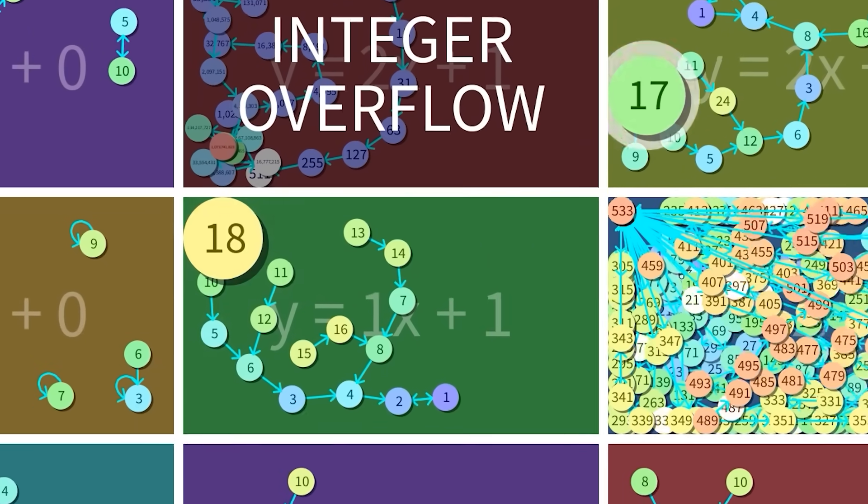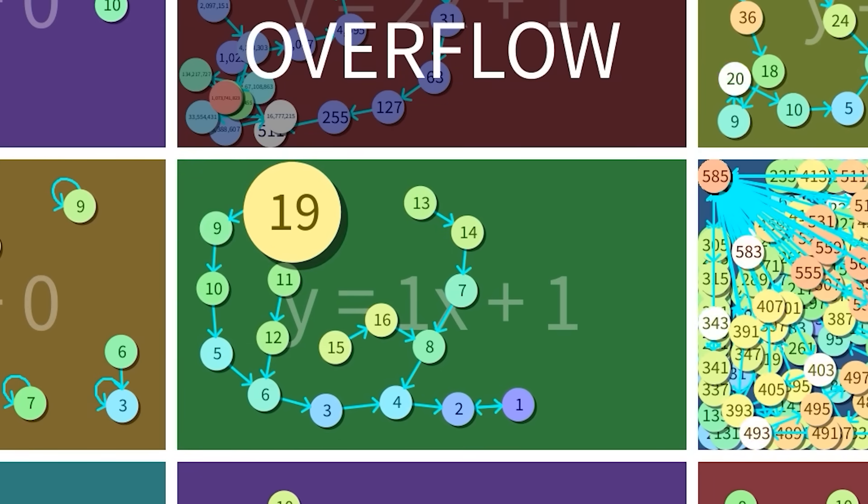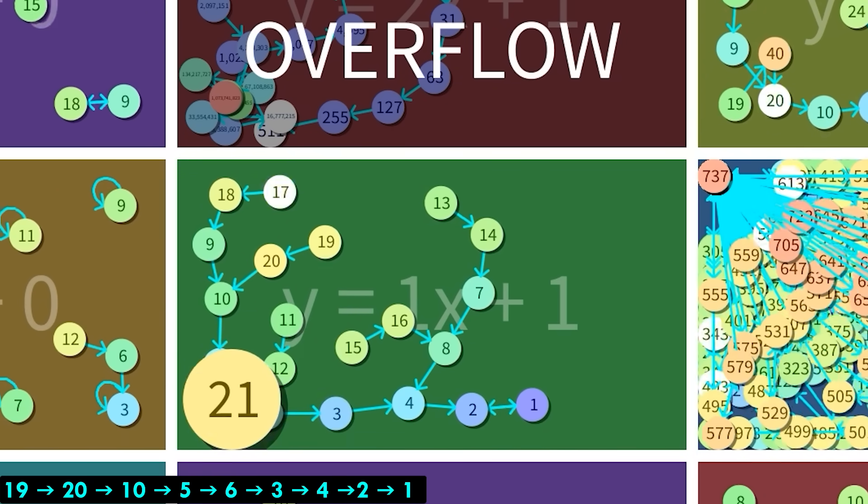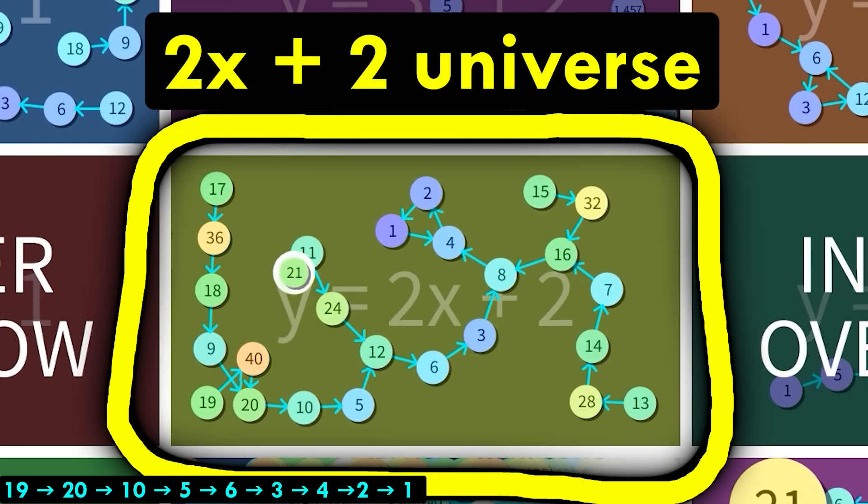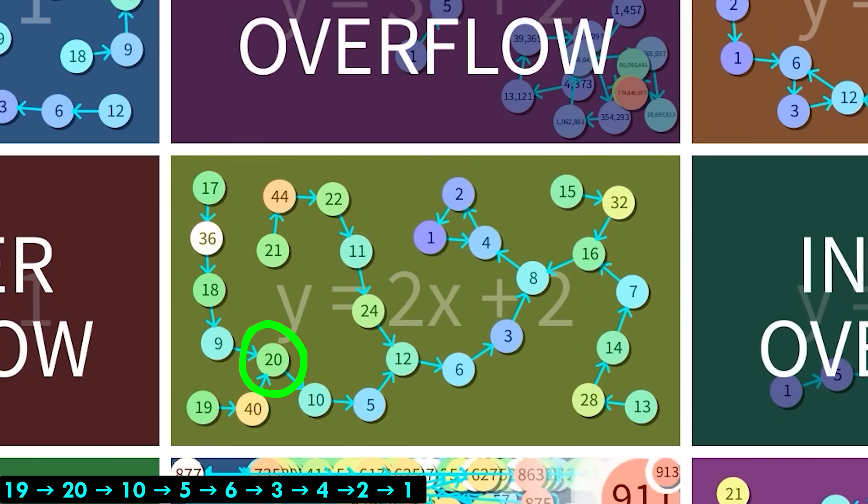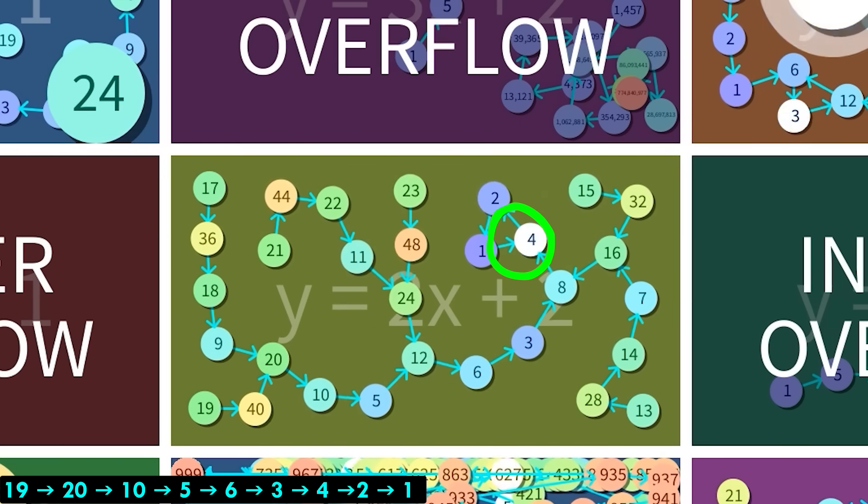Here's an example to show what I mean. Notice that in the 1x plus 1 universe, 19 follows the path 20, 10, 5, 6, 3, 4, 2, 1. And in the 2x plus 2 universe, the double of before, 19 now follows the path, ignore 40, 20, 10, 5, ignore 12, 6, 3, ignore 8, 4, 2, 1.